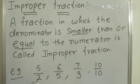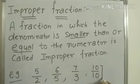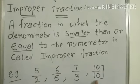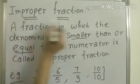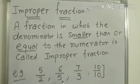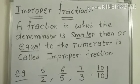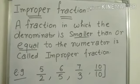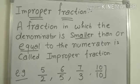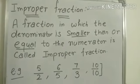Here all the numerators are greater than the denominator, and they can be equal also. These kinds of fractions are called improper fractions. Students, with the help of this video, try to do the questions related to exercise 7.2, question numbers one, two, and three. Try to do them yourself at home. Thank you so much.